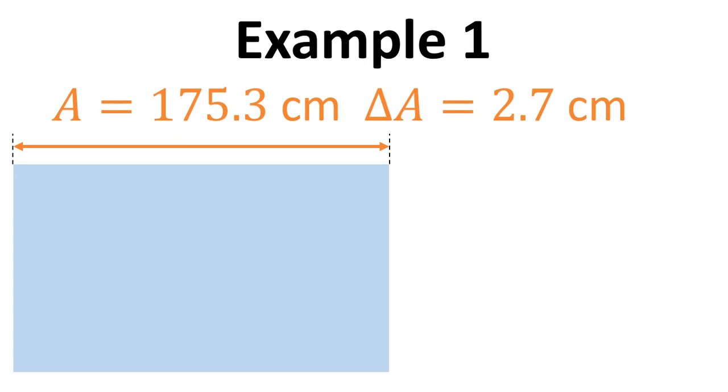We can also write this down as A equals 175.3 centimeters, delta A representing the uncertainty equals 2.7 centimeters.